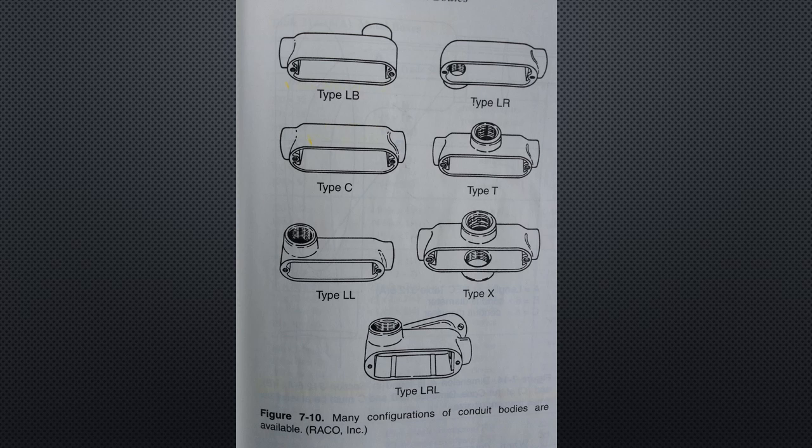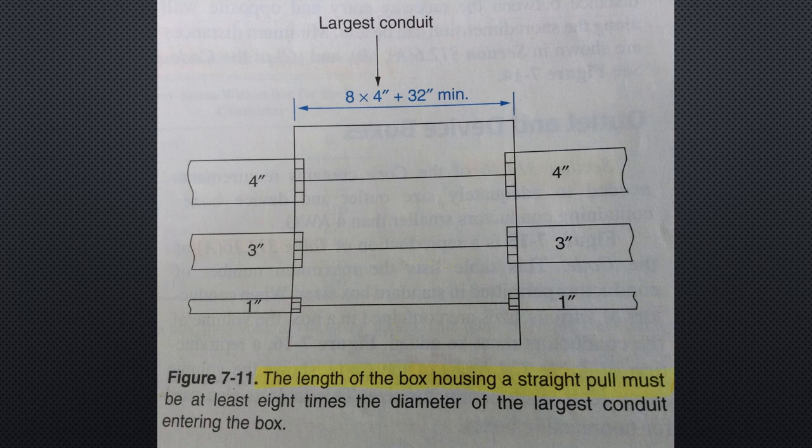Enclosure sizing: outlet boxes, device boxes, junction boxes, and conduit bodies must be of adequate size to allow for free space for all conductors within the box. Conductors should never be tightly cramped or bunched into a box of inadequate size and volume. Cramming wires into the boxes can damage insulation and create the possibility of a ground fault or short circuit.